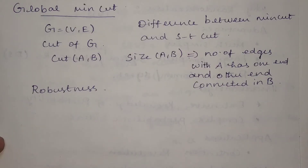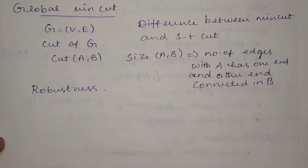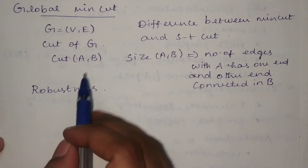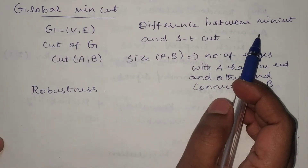We find the capacity value of those cuts — summing up the capacity values of all edges that the cut passes through. If you have more than one cut in the same graph, we can find the capacity of each cut respectively. Now let me tell you the difference between the minimum cut and the ST-cut problem.